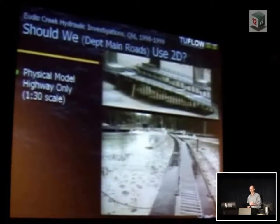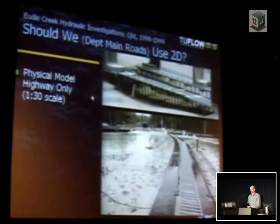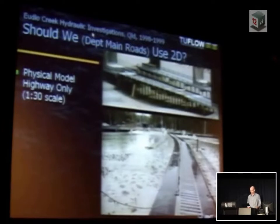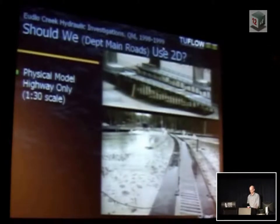Going back about 10 years, the Main Roads Department here in Queensland was raising the question: should we be using 2D modeling for modeling basically highway structures? At the same time there was a legal case that went all the way to the High Court of Australia, that was upheld and favored the landowner, and the whole case had to be re-heard. So partly in preparation for that, the Main Roads Department were addressing the question as to whether they should be doing some higher-level modeling to deal with these situations.